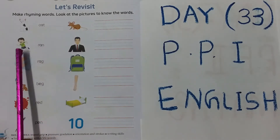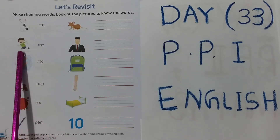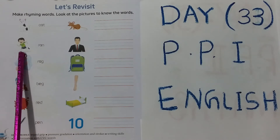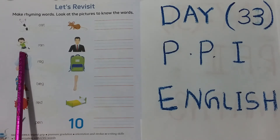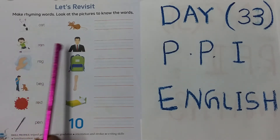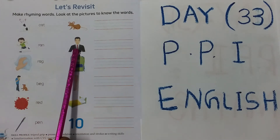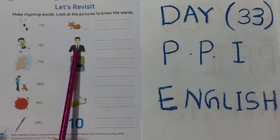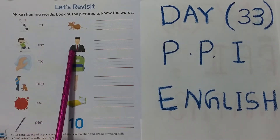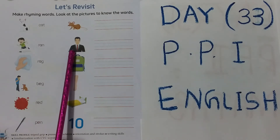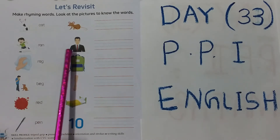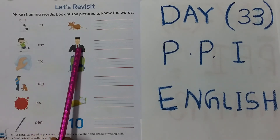Now see the next. Look at the boy — the boy is running. So: Ran. Next is Man. Ran, Man — this is also a rhyming. Ran, Man.